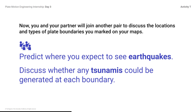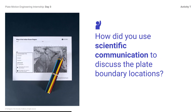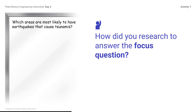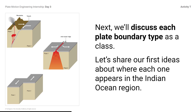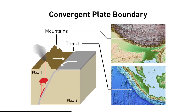Predict where you expect to see earthquakes. Discuss whether any tsunamis could be generated at each boundary. How did you use scientific communication to discuss the plate boundary locations? How did you research to answer the focus question — which areas are most likely to have earthquakes that cause tsunamis? You might respond: we looked for clues on where the plate boundaries are and which types they are based on the landforms. Next, we'll discuss each plate boundary type as a class. Convergent plate boundary: the two landforms associated with this plate boundary type are trenches and mountains. Trenches look like dark bands along the seafloor, and mountains on the landmasses are noted by changes in elevation.